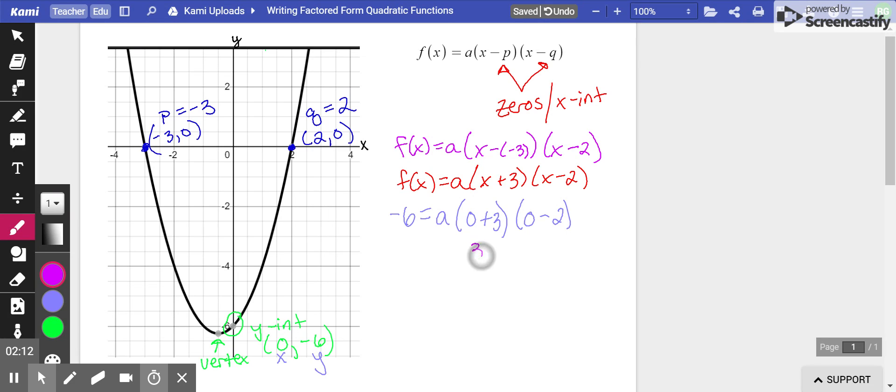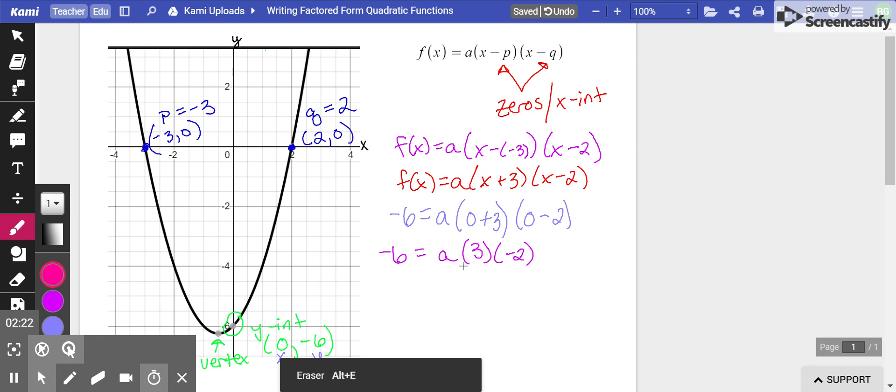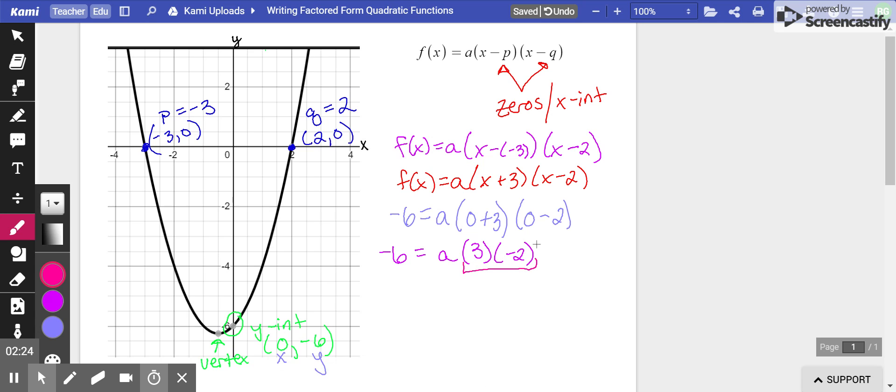So 0 plus 3 is 3, 0 minus 2 is negative 2. So currently we have negative 6 equals a times 3 times negative 2. Multiply. 3 times negative 2, negative 6. We get negative 6 equals a times negative 6, which is really negative 6 equals negative 6a. That's probably a format you guys are more familiar with.